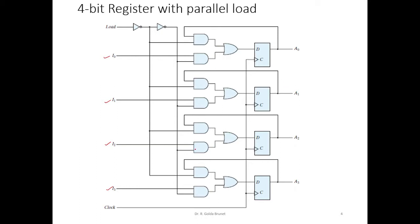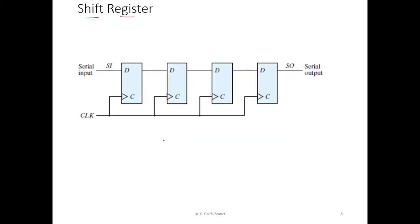Such parallel loading into flip-flops is not possible when we have long-range communication. For example, when we want to print something from a PC, the printer is connected to the personal computer and the data from the PC to the printer is a serial communication — data cannot be sent in parallel. In such cases, we use the shift register.